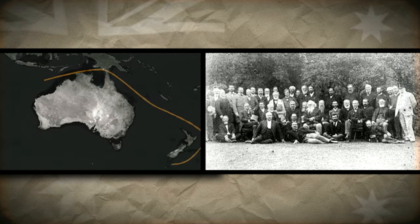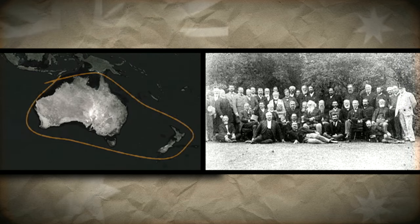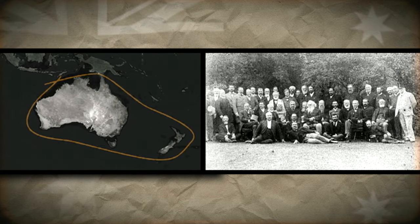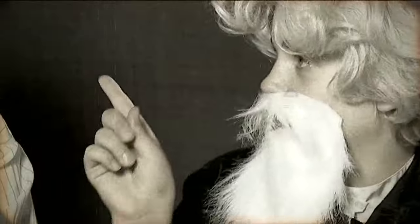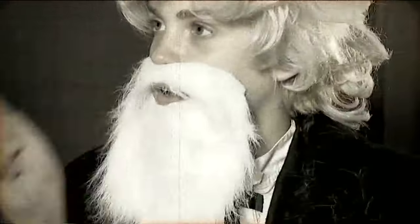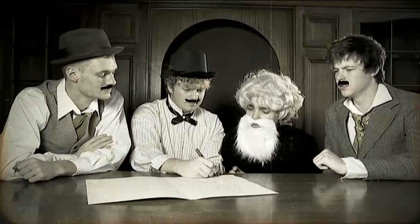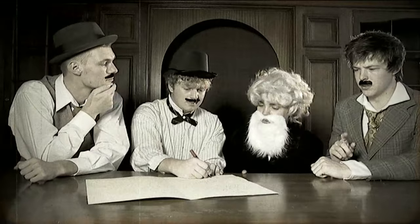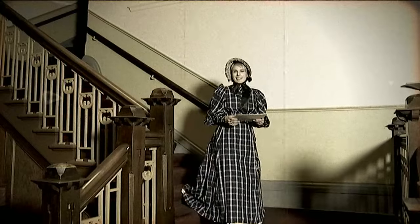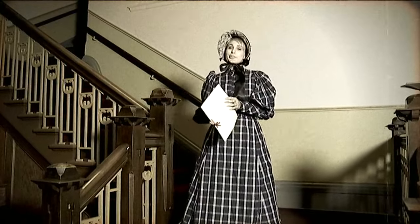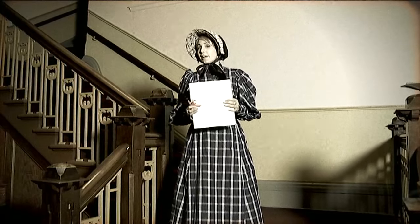Parkes convinced the leaders of the colonies to get together and talk about Federation. Some came from New Zealand — it was a British colony too, and it could have joined the new country. After much negotiating, in 1891 the delegates drew up a draft constitution for the Commonwealth of Australia, but the idea didn't take off. It wasn't a good time for the colonies — the economy wasn't doing well, and there was a feeling the draft constitution wasn't democratic enough and didn't give ordinary people enough of a say.